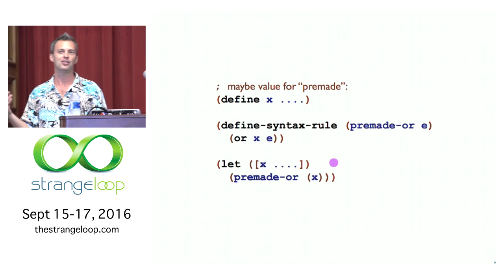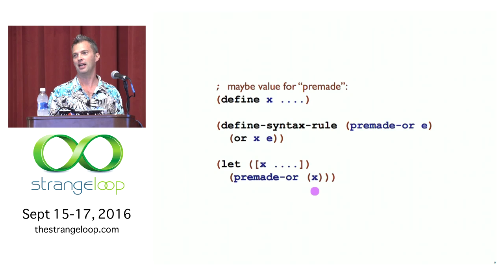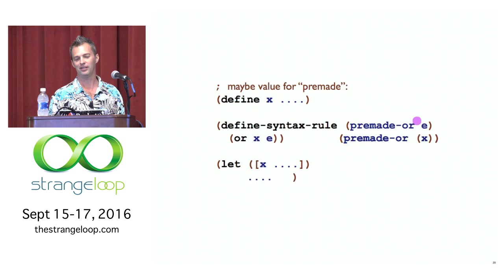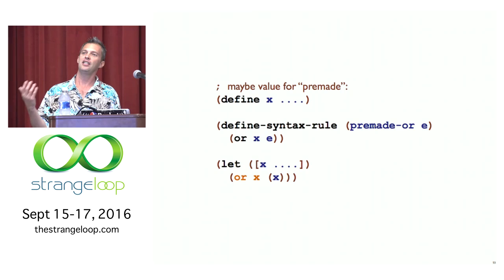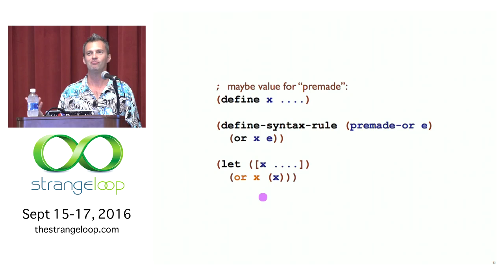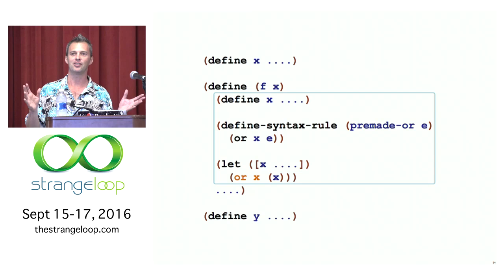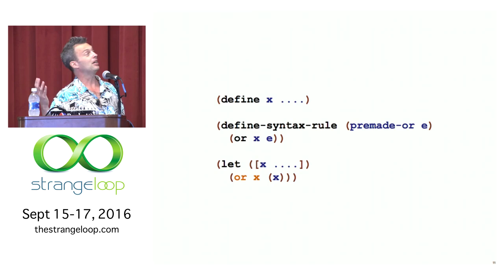Here's a use of premadeOR. I have a different X — this X is bound to a function that apparently does a bunch of work I prefer to avoid, so I'm either using the premade value or calling the function X. Because premadeOR is defined as a macro, it will match the use with the pattern, X will match E, and we'll get OR X, call the function X. The orange parts were introduced by the macro expansion — the color orange is somehow not enough to distinguish them, so we need to figure out a more general solution.